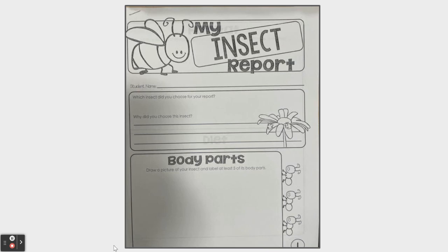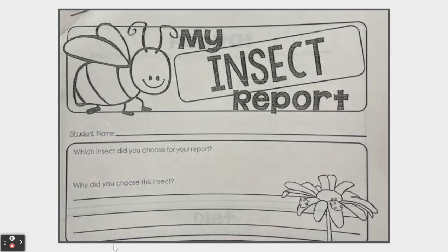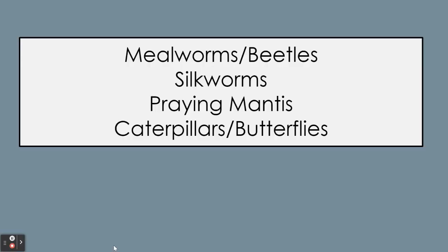For the first section, you are going to choose an insect of your choice. You can either choose an insect we learned about in class this year, or if you have a different insect you would like to talk about, you can — you just might have to do a little research on your own for some of the sections. The first section asks: which insect did you choose for your report, and why did you choose this insect? Here are the insects we learned about this year: mealworms or beetles, silkworms, praying mantises, and caterpillars or butterflies. You can choose from this list, or choose a different insect if you'd like.